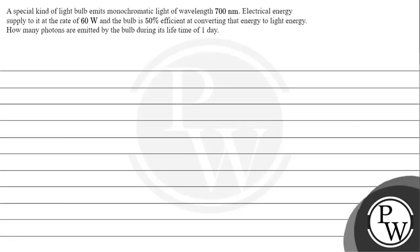Hello, let's read the given question. The question says a special kind of light bulb emits monochromatic light of wavelength 700 nanometers. Electrical energy is supplied to it at the rate of 60 watts and the bulb is 50% efficient at converting that energy to light energy. How many photons are emitted by the bulb during its lifetime of one day?